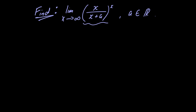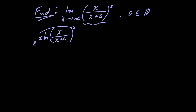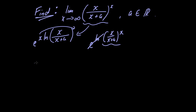We begin by rewriting this as e raised to x multiplied by the natural logarithm of x divided by x plus a. We can do this because using the power rule and bringing the x up, we have e raised to the natural logarithm of x divided by x plus a, raised to the power x — these two cancel and we're left with the original expression.